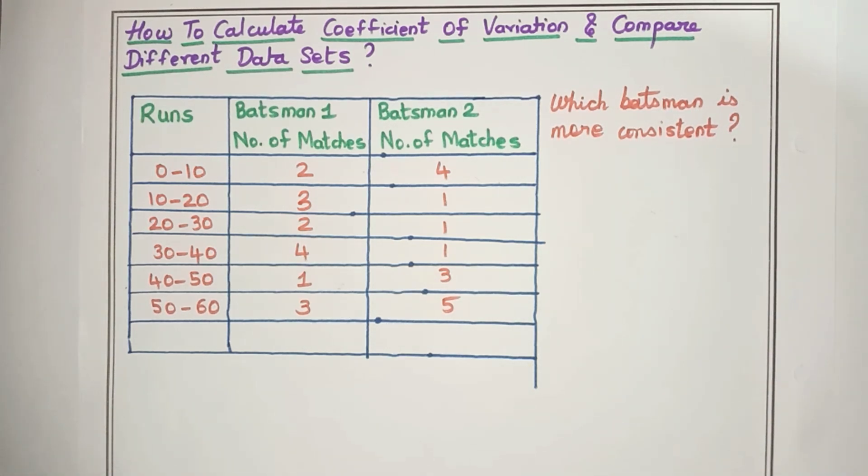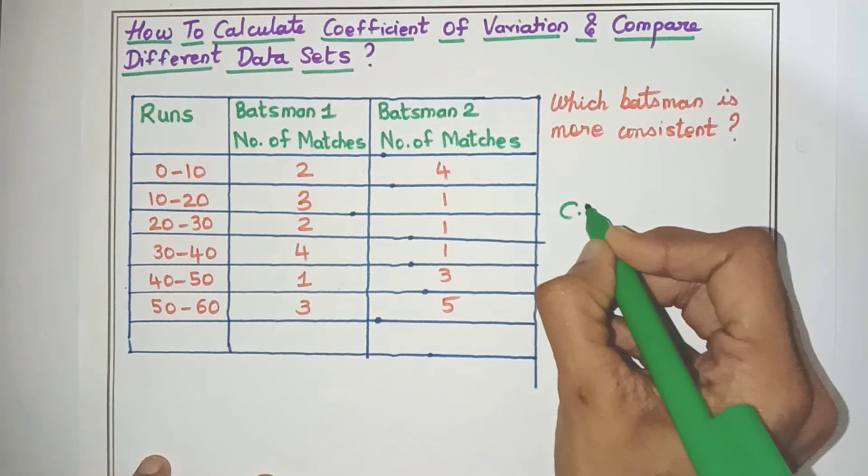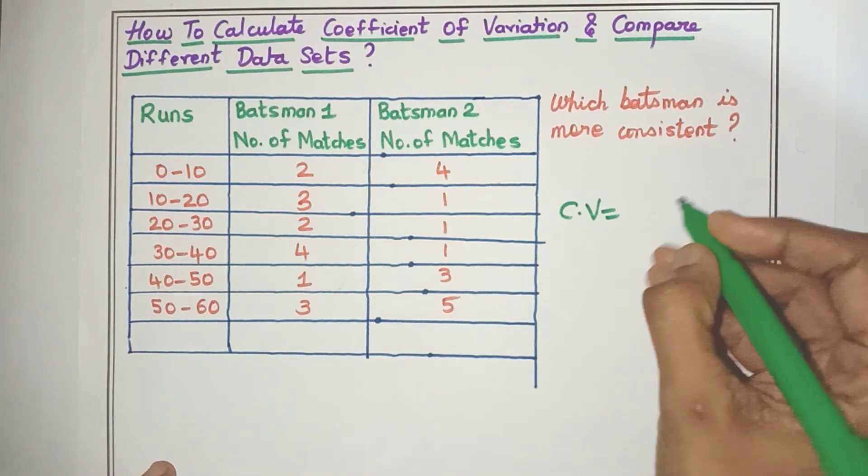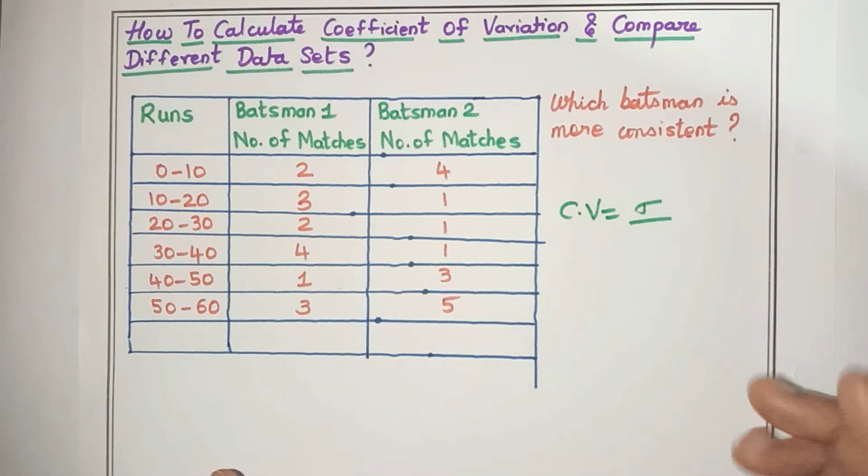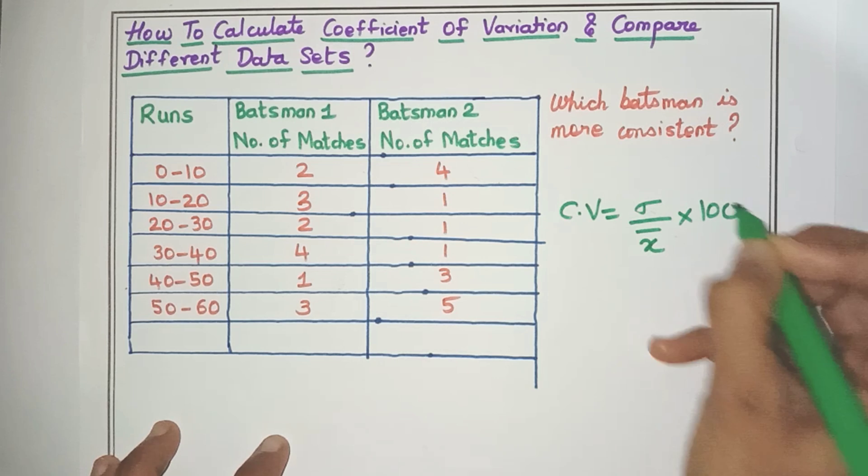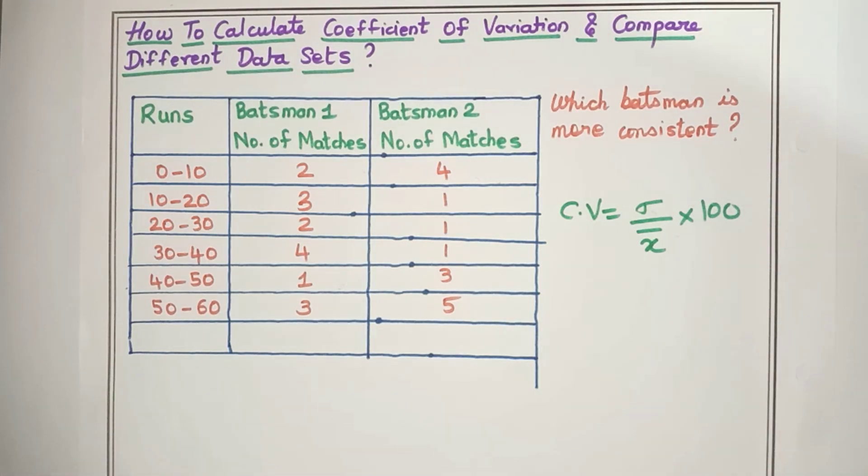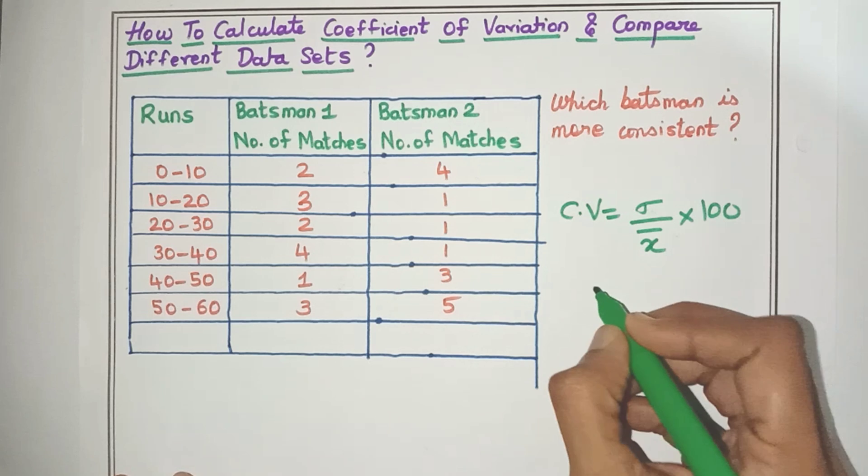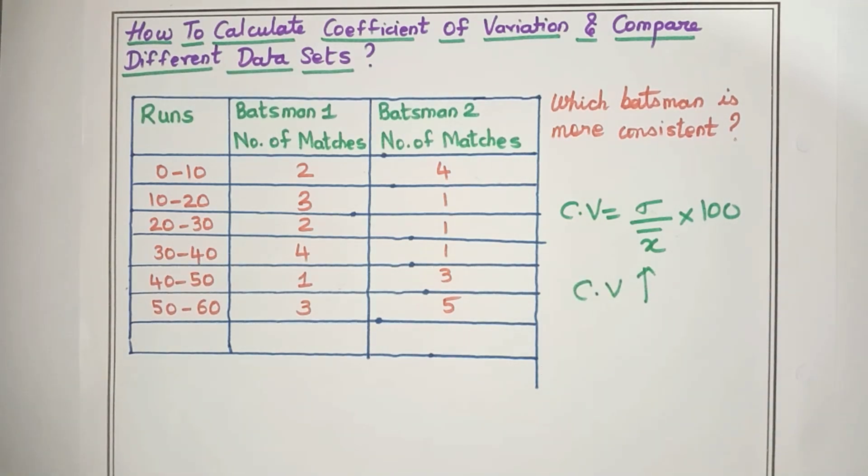Let's first see what is coefficient of variation. Coefficient of variation or CV is nothing but the standard deviation, which is sigma, divided by the mean of the data multiplied by 100. Now the CV value always tells you how varied your data is. So the more value your CV has, that means your data is more varied. Whereas if your CV value is less, the data is less varied.